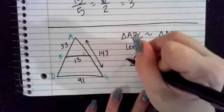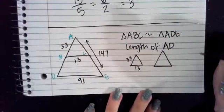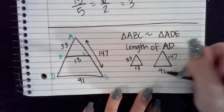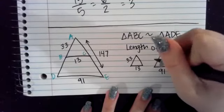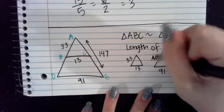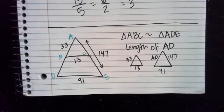There we go. So this side is 33. This is 13. This is 147 in the bigger triangle. This is 91 in the smaller triangle. And this is the side we want. So you can either put like an X here, or I might just label this AD, because I know that this is the side that I want.